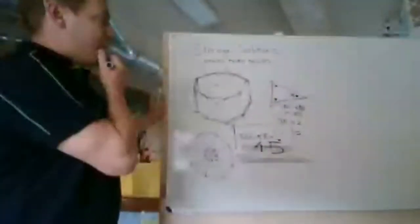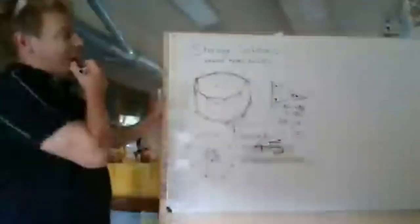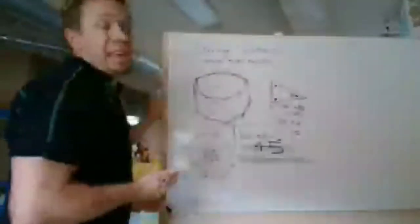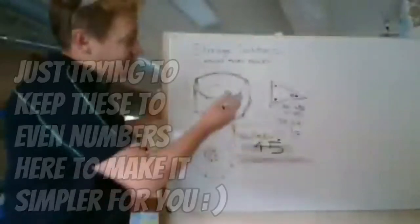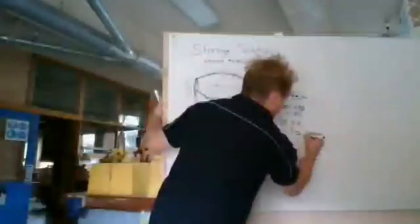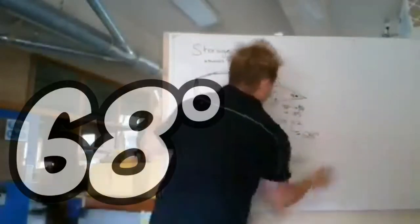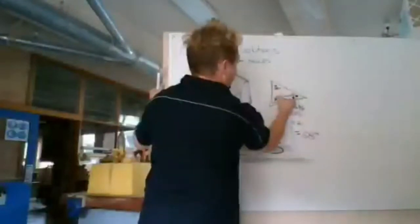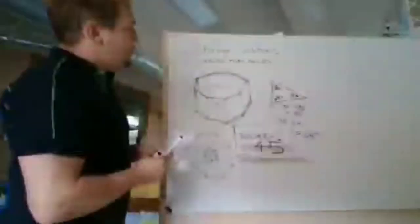So obviously here we do 135 divided by 2. If we go, all right, half of 100 is 50, half of 36 is 18, 50 plus 18 is 68 degrees. So what that tells us there is that that's 68 degrees, that's 68 degrees.